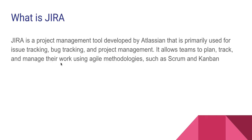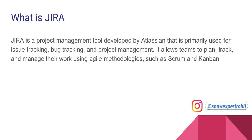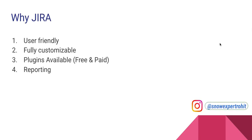Jira allows teams to plan, track, and manage their work using agile methodologies such as Scrum and Kanban. Agile has various methodologies — you can use Scrum, Kanban, or your own method — and using that you can track and plan tasks. To track tasks at a high level, we need Jira.